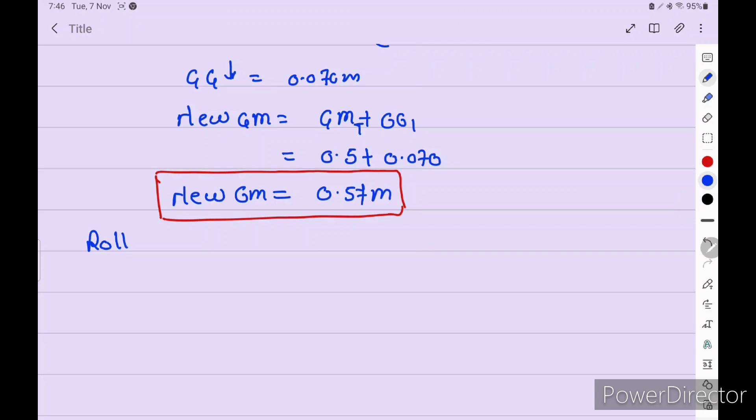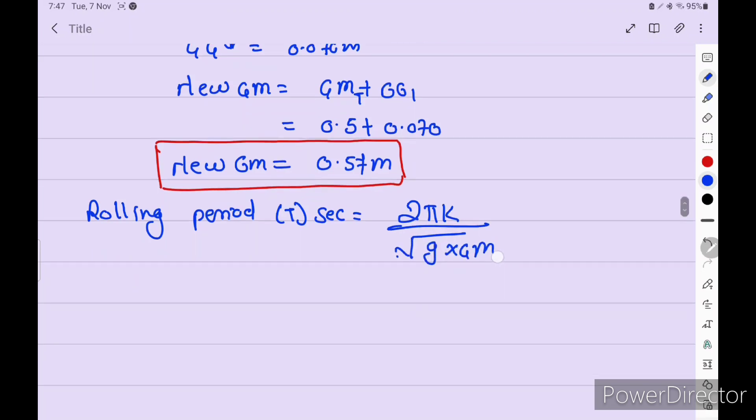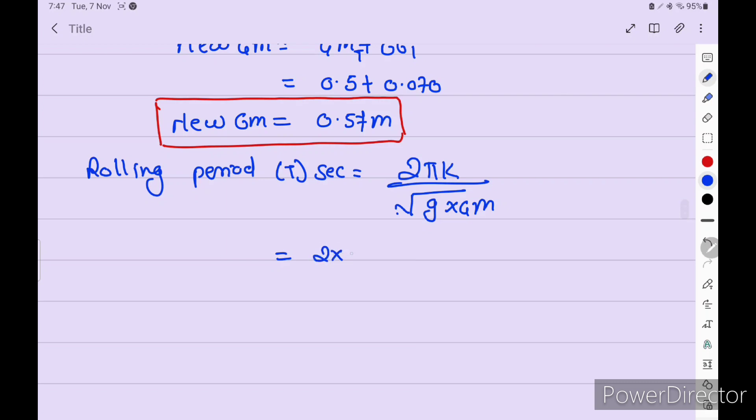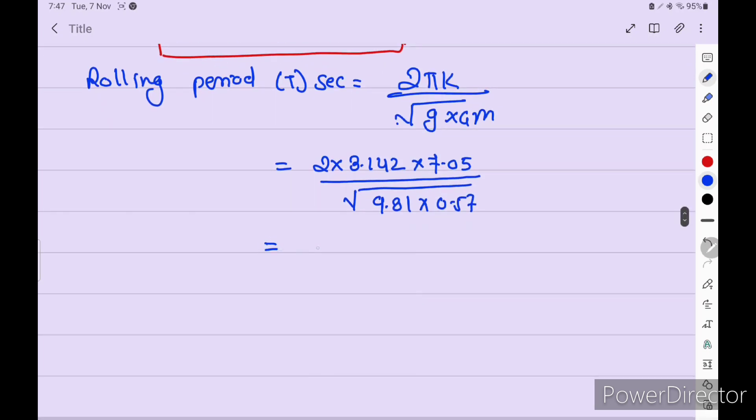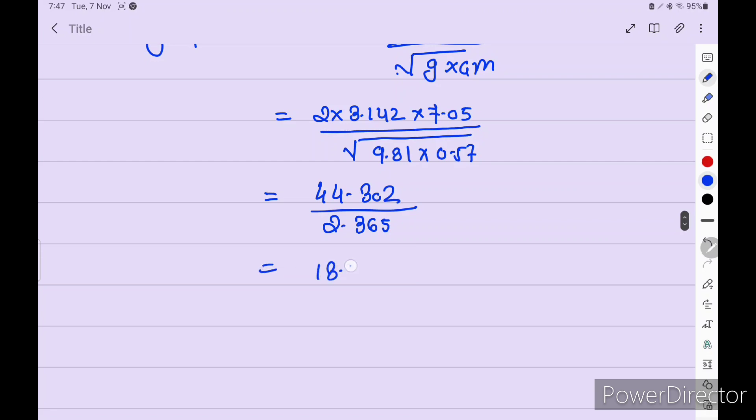Now we have to put this gyration and new GM and calculate for the next after this GG1. Rolling period T per second equals 2πk under root small g into metacentric height. Put the values: 2 into 3.142 into k we calculated, under root 9.81 into 0.57. We get 44.302 divided by 2.365, and the rolling period is 18.73 seconds.